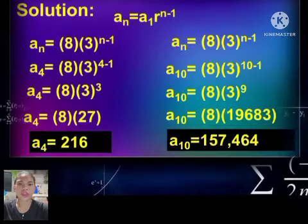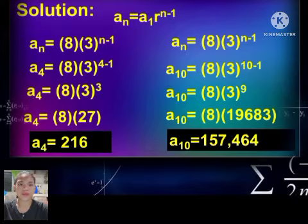So to find the nth term, substitute the given values: a sub 1 equals 8, r equals 3, into the formula — giving a sub n equals 8 multiplied by 3 raised to n.